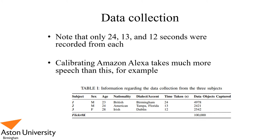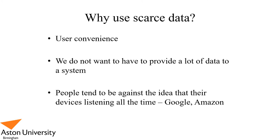If we think of this in terms of calibrating a smart home device — if one were to calibrate Amazon Alexa, it takes a lot longer than 12 seconds, performing biometrics and speaker classification among other tasks. So why do we use scarce data? It's convenient for the user because as users of new technology, we don't want to provide a lot of data to a system. It takes time, it takes effort, and it makes us suspicious about what the system is doing with all the data it's collecting. Very recently, people tend to be against the idea that their devices are listening to them all the time — I personally get concerned that my Amazon Alexa might be listening when I don't want it to.